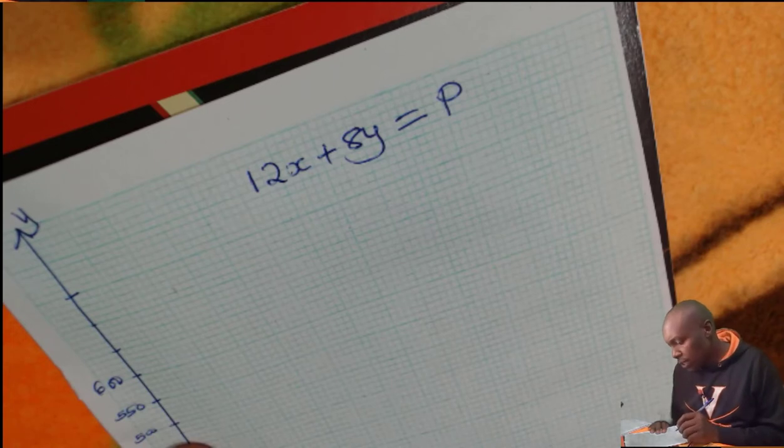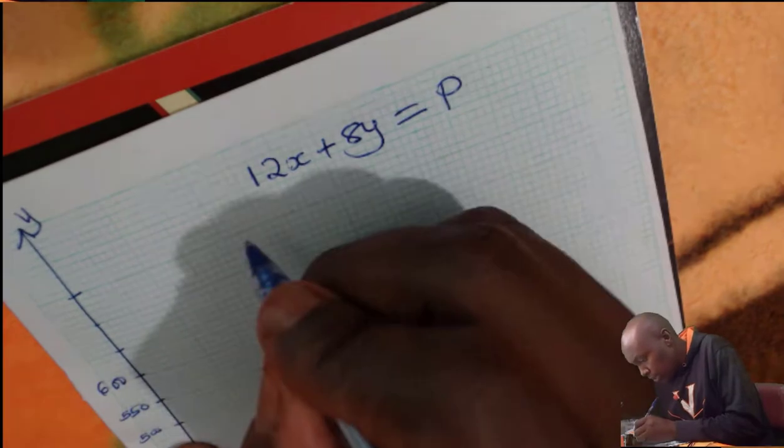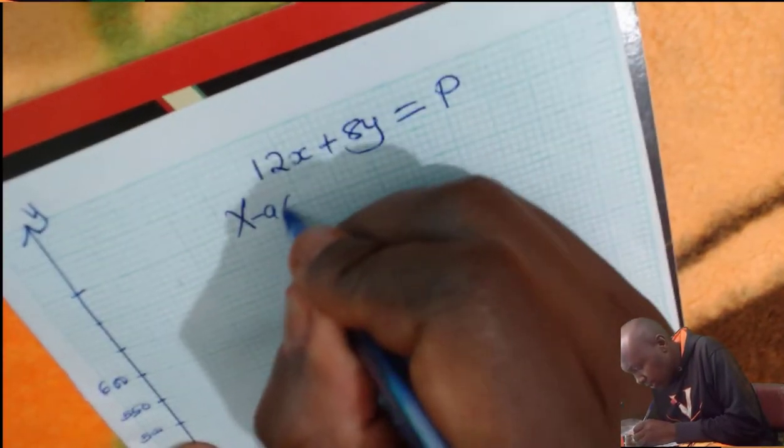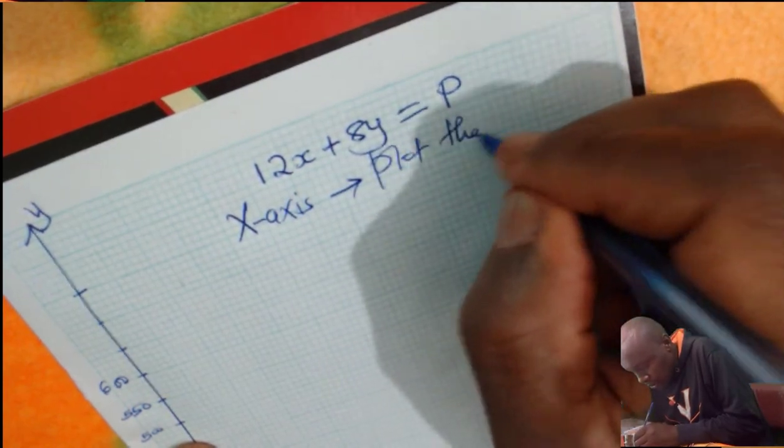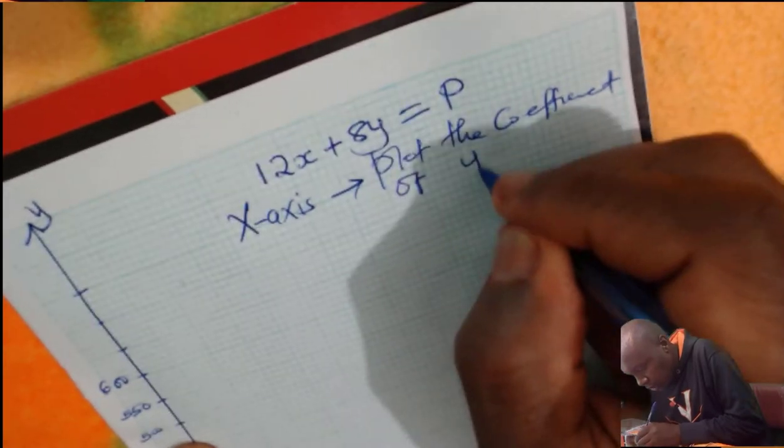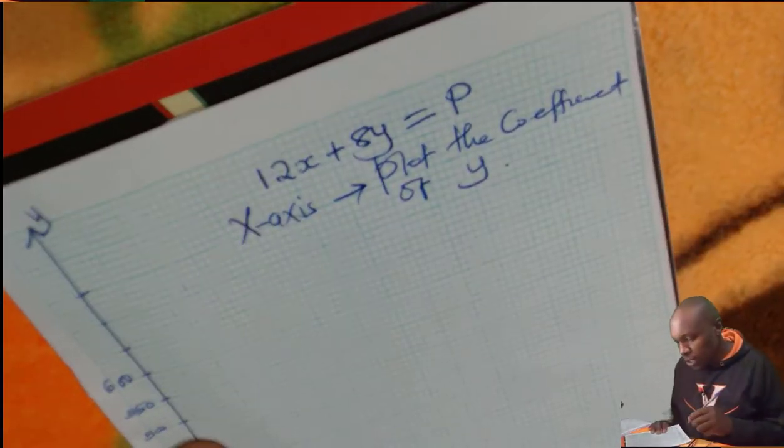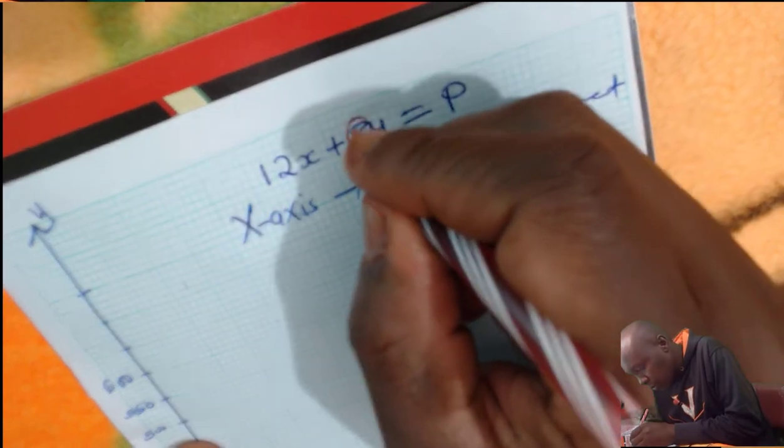So to draw the search line, the simplest way is whereby you decide on the x-axis, you plot the coefficient of y. And which is the coefficient of y? The coefficient of y is what multiplies y, which is 8.